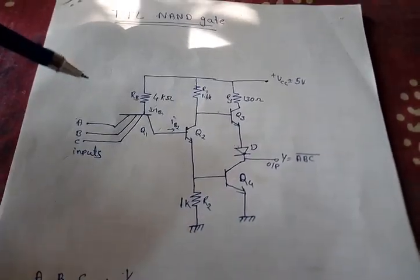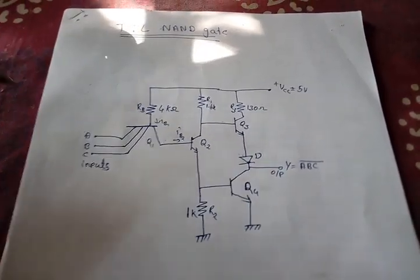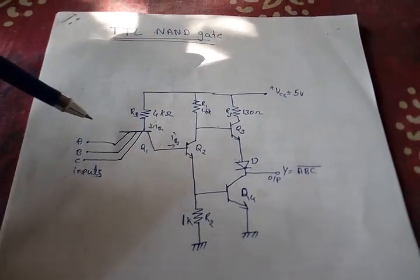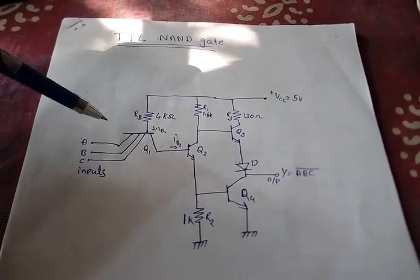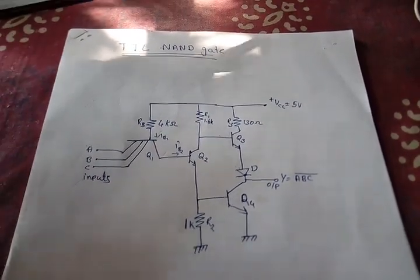This is the circuit diagram of DTL NAND gate. Here we can see that in the input of the DTL NAND gate, there is a multi-emitter transistor. This is a special transistor.